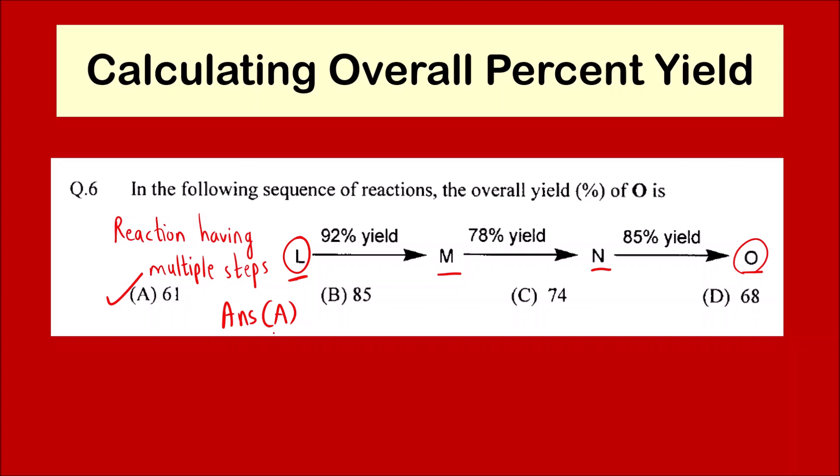For any reaction you can apply this for n number of steps. Here there are 3 steps. For 4 steps, 5 steps, 6, 7, 10, 20, any number of steps - what you have to do is take the fraction of that particular percent yield and multiply all the percent yields. Finally, whatever answer you get, multiply by 100.